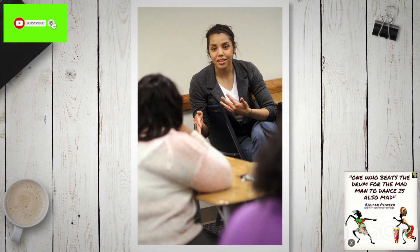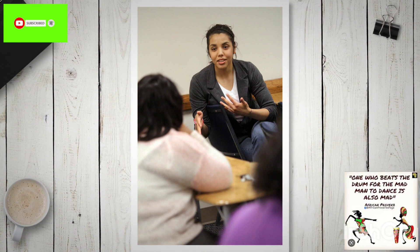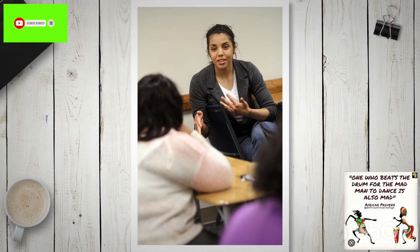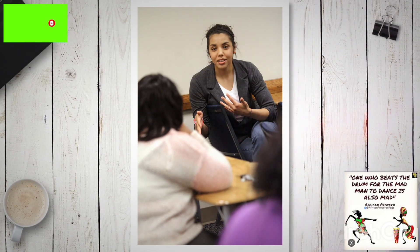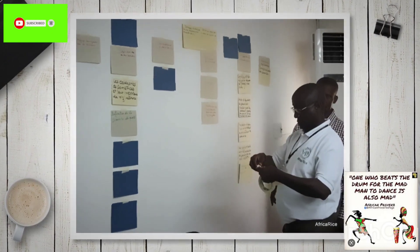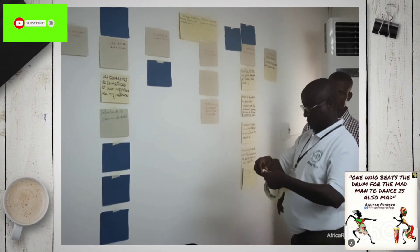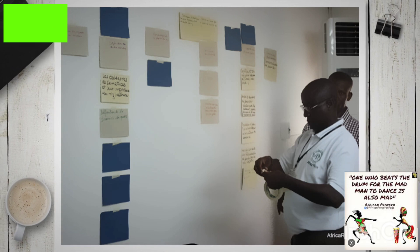Stage 1 of the PE course prepares you to work with social work students on their first placement. You will learn to develop a curriculum, manage the placement, support learning and assess achievement.